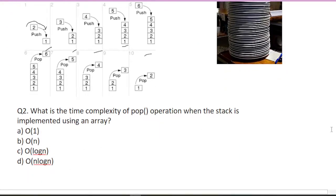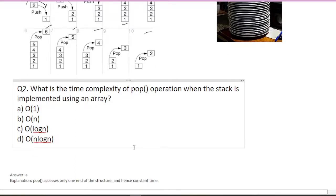Next question: what is the time complexity of pop operation when stack is implemented using an array? Time complexity means how much operational time it takes. Answer is option A. Pop accesses only one end of the structure, hence constant time because it takes from only one end. One end is closed.